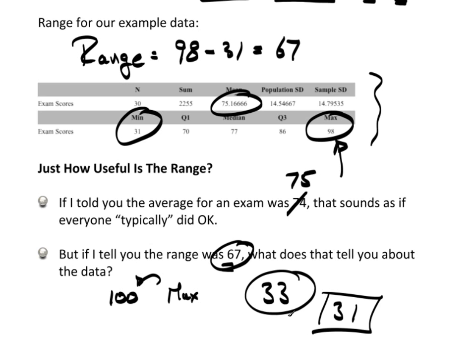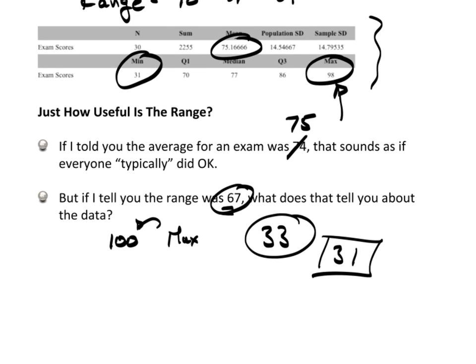Now the range really tells me nothing about how the data is clumped, but knowing that my mean is up here at 75 and I have a maximum of 98, I know right away because of this range that however it's clumped, it's going to be something like this: I'm going to have a skewed left distribution. There's no doubt about that.